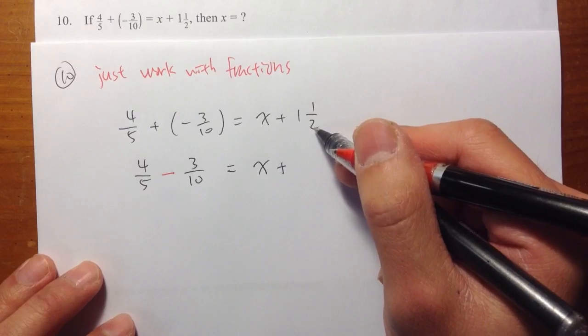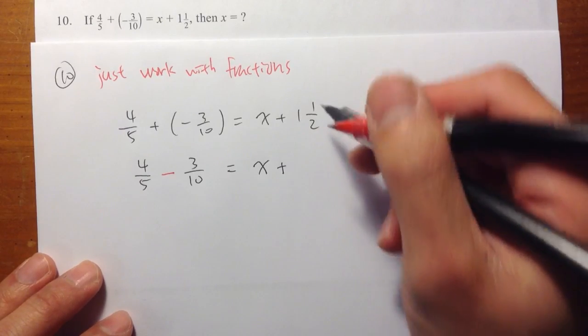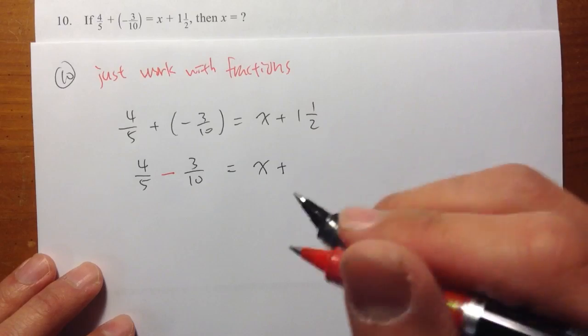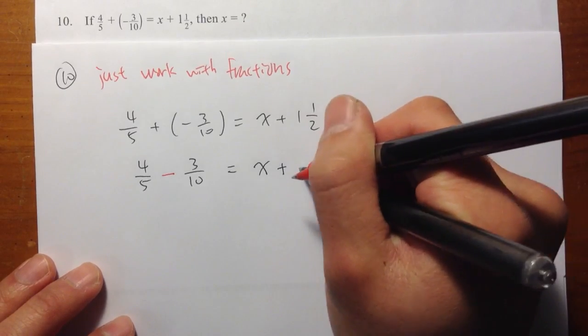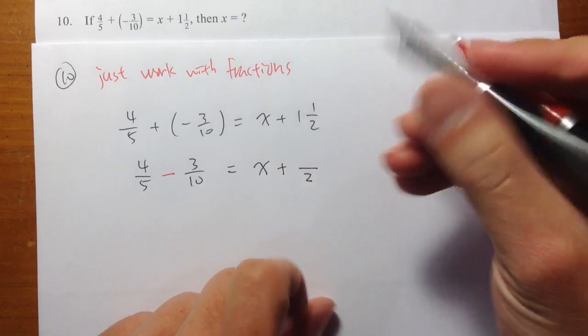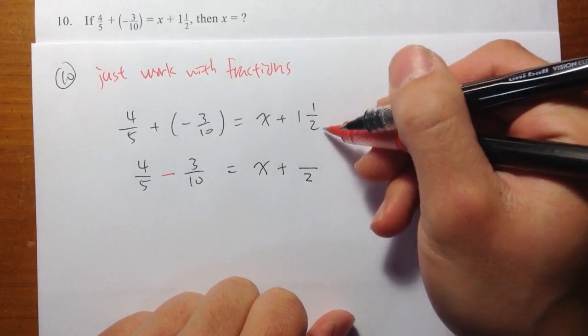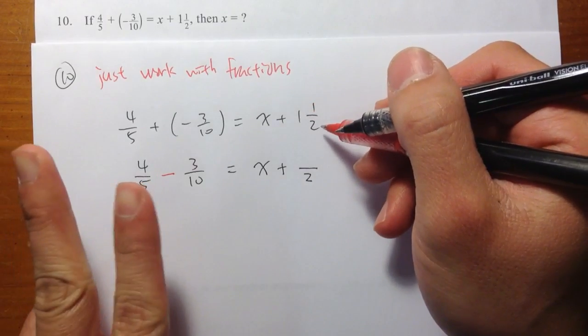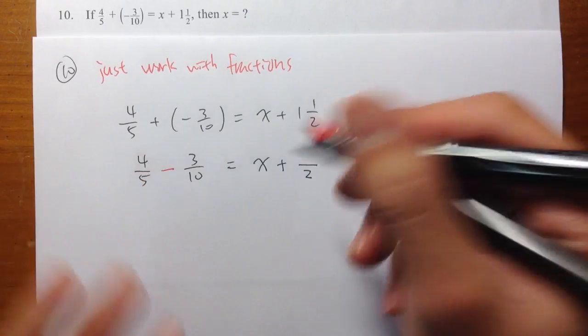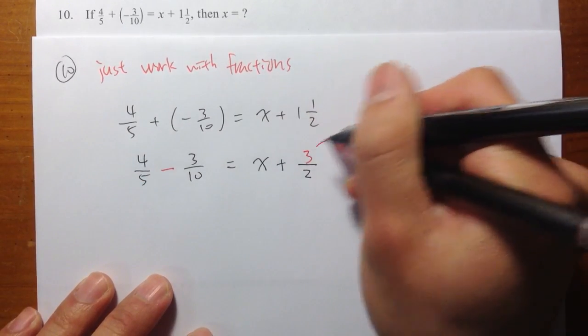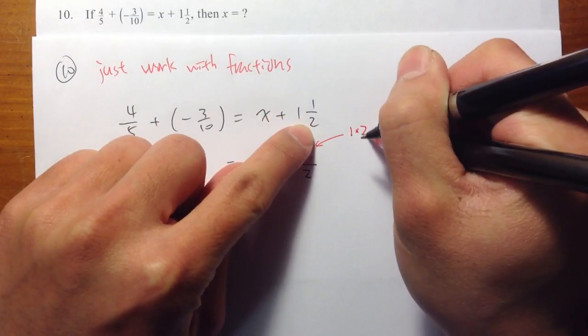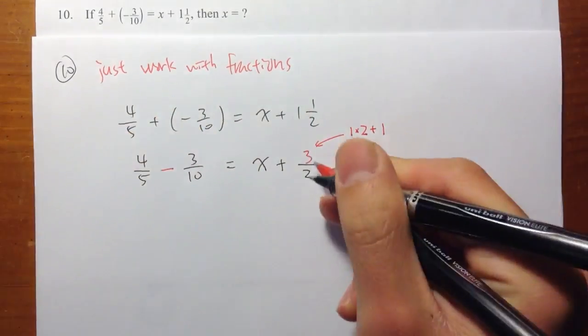Right here, we have 1 and 1 half, which is a mixed number. Let me change this mixed number into an improper fraction. And the way to do that is, the denominator first stays the same. So we still have the 2. And then you are going to take the 1 times the 2, which is 2. And then add the 1 on the top. So together, you have 3. So let me make a note right here. You take the 1 times the 2, and then plus the 1. That's how we get the 3.